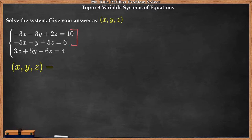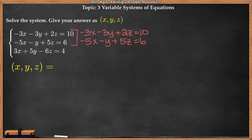And then our traditional methods of solving for x or y will work — something like substitution or elimination. So let's rewrite these. I'll say negative 3x minus 3y plus 2z equals 10, and then we have negative 5x minus y plus 5z equals 6. Now out of this system, we want to pick a variable to eliminate. It looks like it would be easiest to eliminate the y, because all I would have to do is multiply the bottom equation by negative 3.